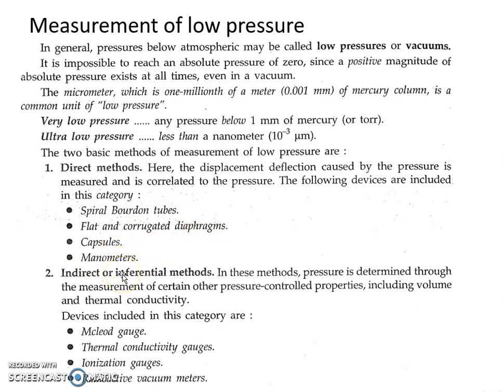In case of indirect or inferential methods, pressure is determined through the measurement of certain other pressure-controlled properties such as volume and thermal conductivity. Devices include McLeod gauge, thermal conductivity gauges, ionization gauges, and radioactive vacuum meters.